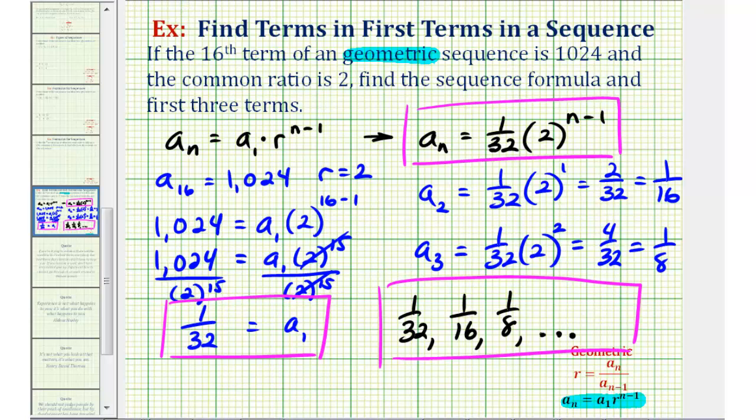Now that we have the sequence as a list, notice how the pattern here, to find consecutive terms, is to multiply by two, our common ratio.